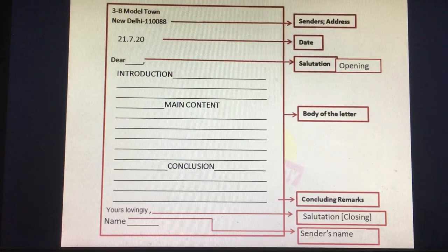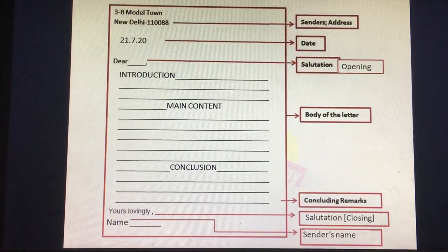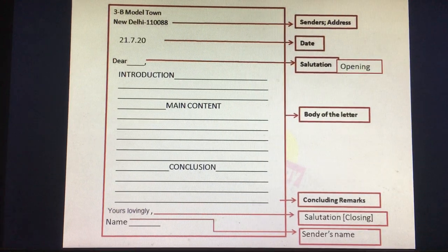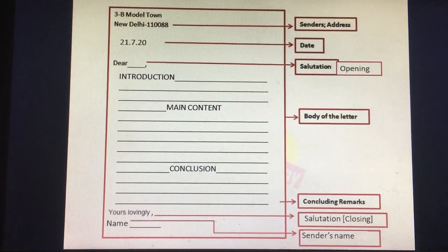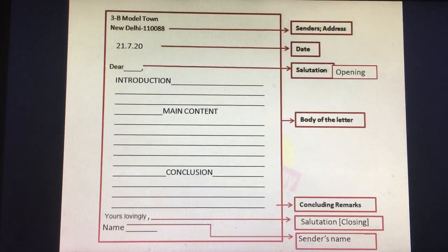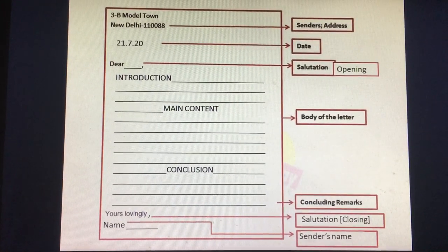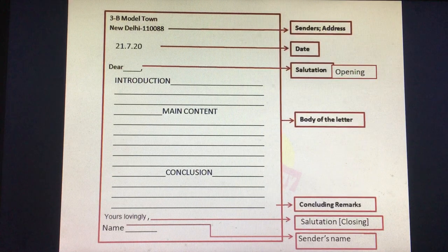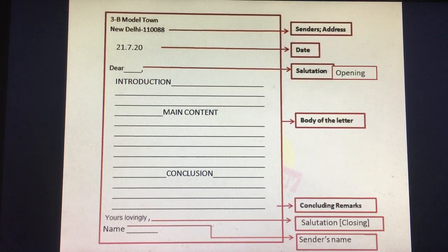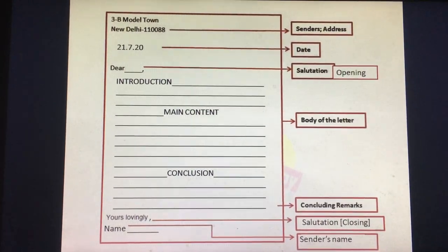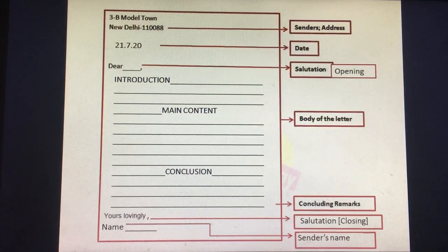Then comes the part where you discuss the topic you are going to write about. This is known as main content. Here you give details like what events occurred, what emotions you have felt, and about your plans for the future. Be relevant. Now comes the final paragraph, that is the conclusion. Here you end the letter on a positive note that will leave your friend with positive feelings. Encourage your friend to write back, like 'Hope to hear from you soon' or 'Please write back.' All three paragraphs together form the body.